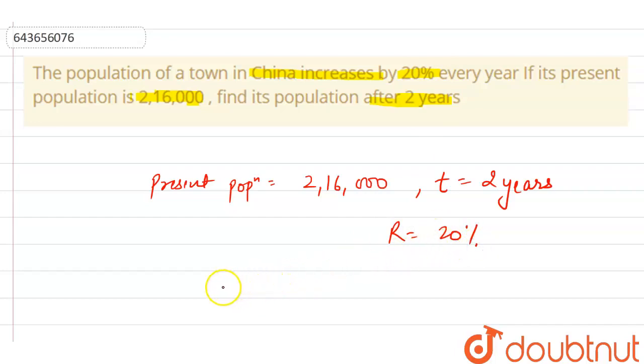We know the formula: A equals P times (1 plus r/100) raised to power t, where A is the amount and P is the principal amount.